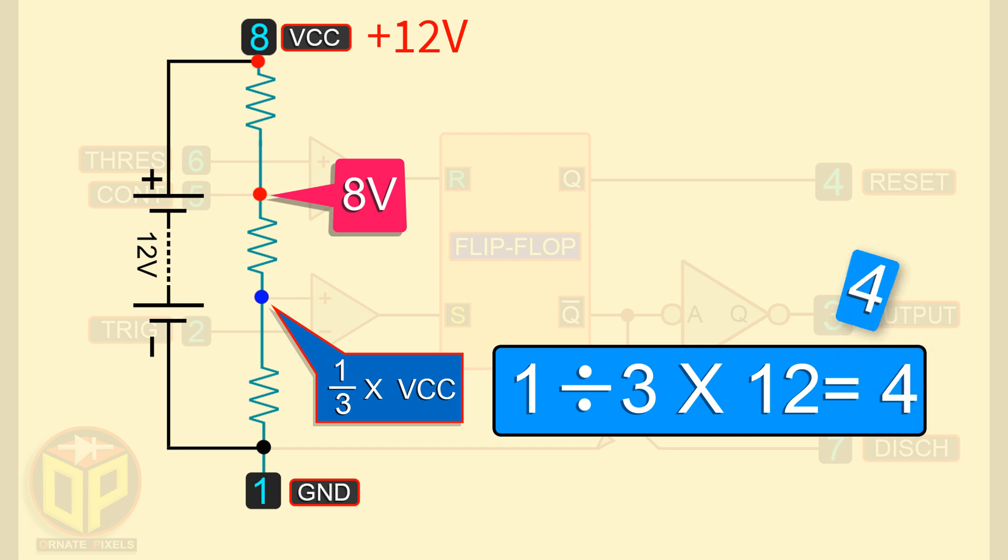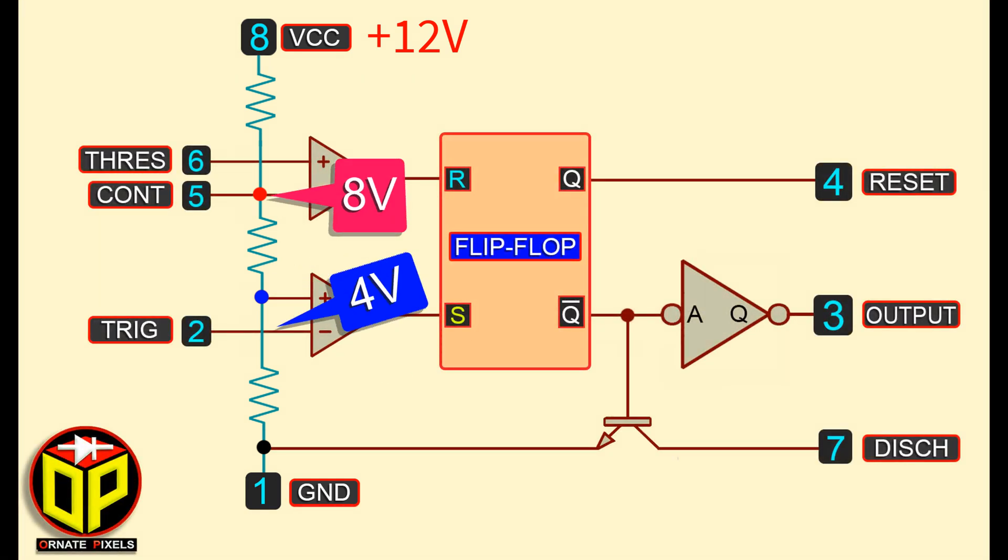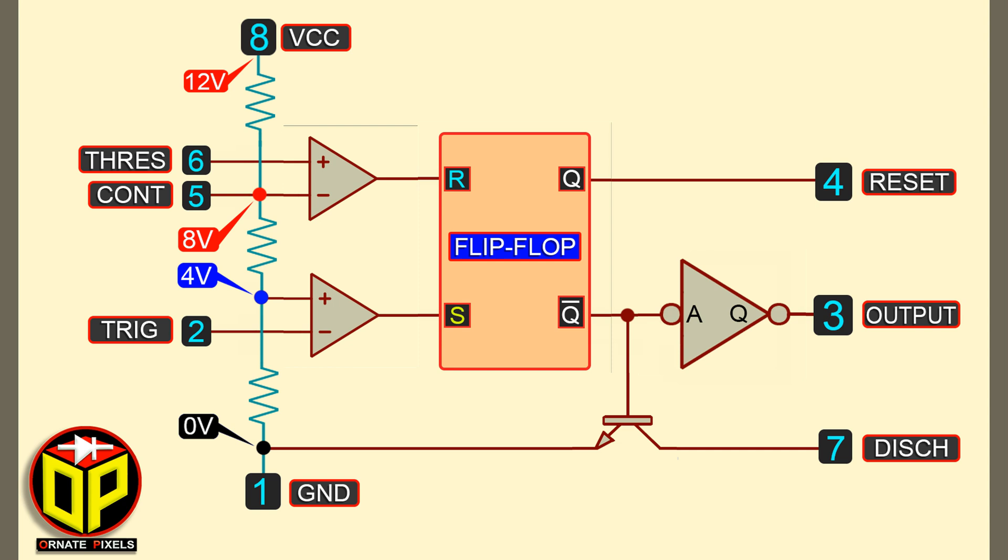Remember, the red terminal is 8 volts and the blue terminal is 4 volts. This was the function of the voltage divider.